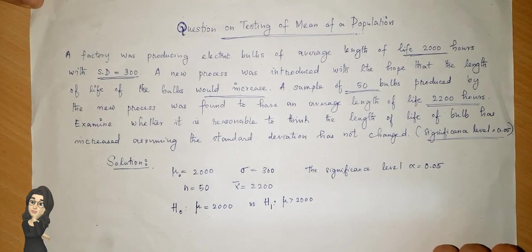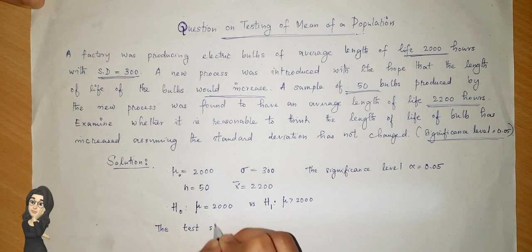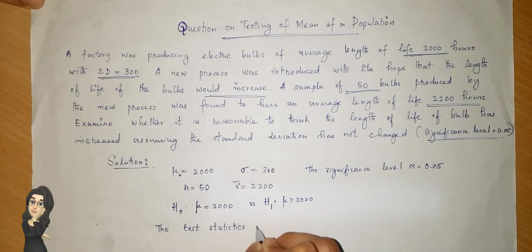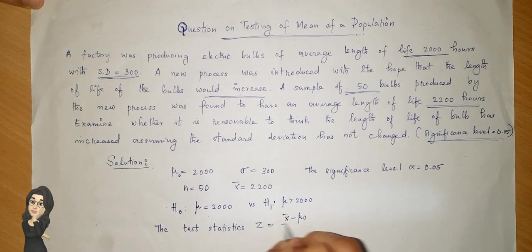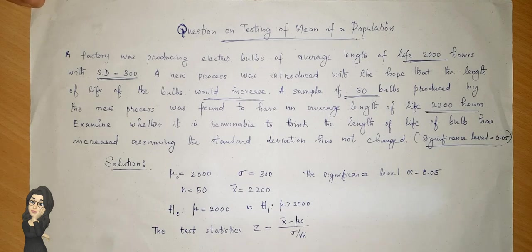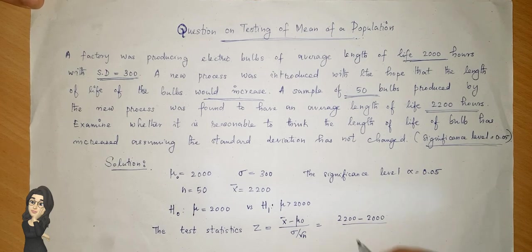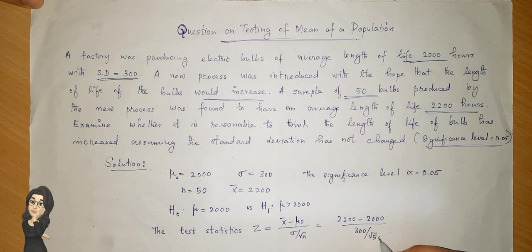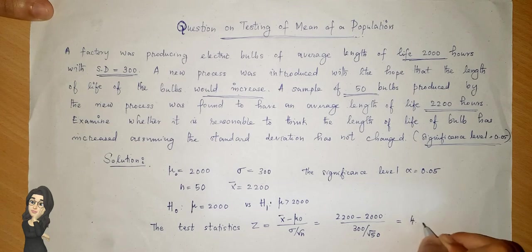With these values known, the test statistic or test criterion is z equal to x-bar minus mu-naught divided by sigma by root n. So x-bar is 2200, mu-naught is 2000, sigma is 300, divided by root 50. On solving this we get the value as 4.71.